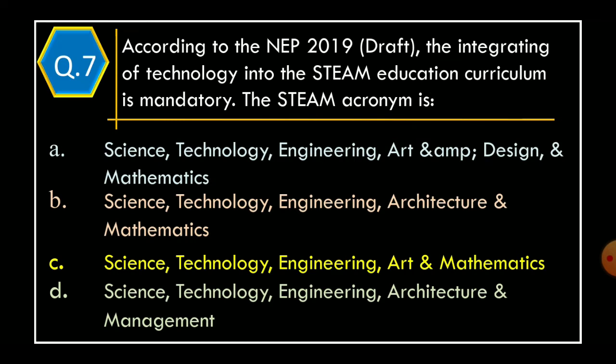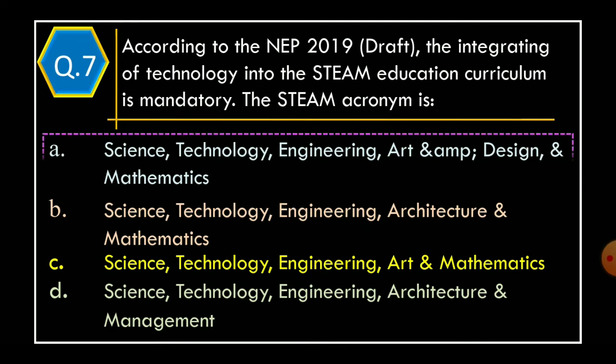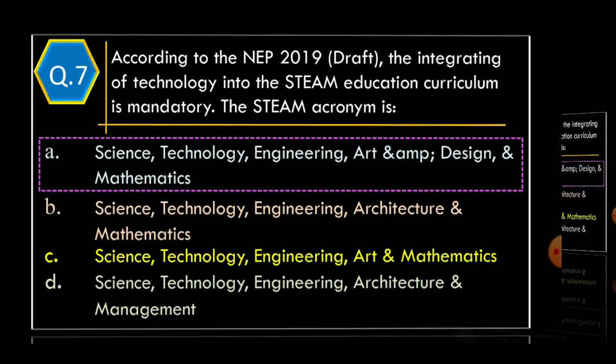Question 7. According to the NEP 2019 draft, the integration of technology into the HTEAM education curriculum is mandatory. The HTEAM acronym is: Option A: Science, Technology, Engineering, Art, Design and Mathematics. Option B: Science, Technology, Engineering, Architecture and Mathematics. Option C: Science, Technology, Engineering, Art and Mathematics. Option D: Science, Technology, Engineering, Architecture and Management. The correct option is Option A: Science, Technology, Engineering, Art, Design and Mathematics.